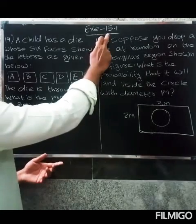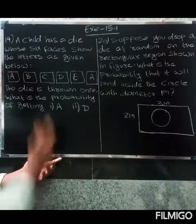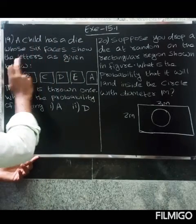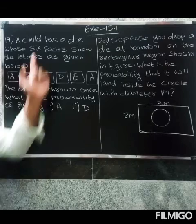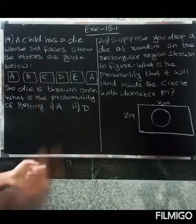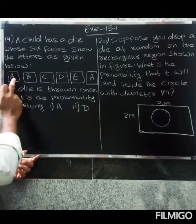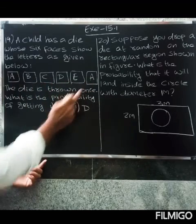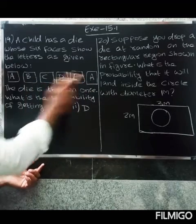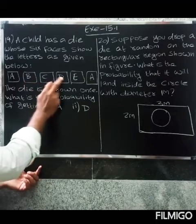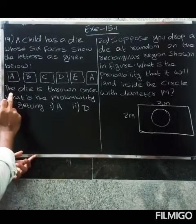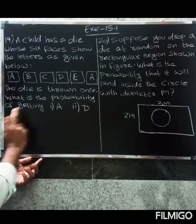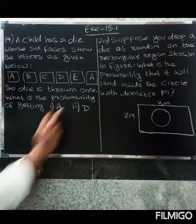Welcome. This is question 19. A child has a die whose six faces show the letters as given: A, B, C, D, E — where A appears two times and B, C, D, E appear one time each. The die is thrown once. What is the probability of getting A, and what is the probability of getting D?